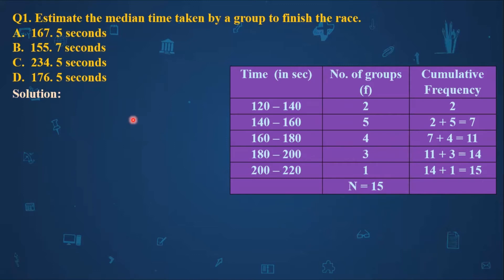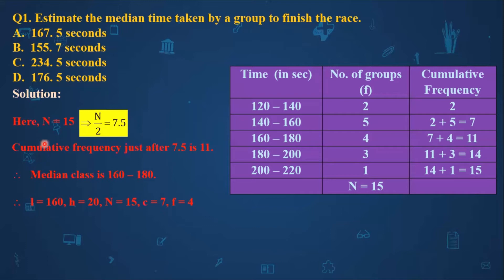With n equal to 15, we find n divided by 2 which equals 7.5. Now we need to find the median class. The cumulative frequency just after 7.5 is 11, so we look at the class corresponding to cumulative frequency 11, which is 160 to 180. Therefore the median class is 160 to 180.